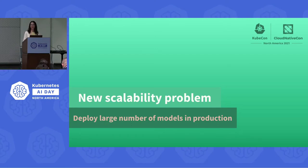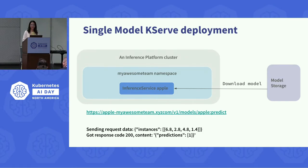Now that we've been running K-SERV in our production environment for a while, we're starting to run into new scalability problems — how do we deploy a large number of models in production? Let's take a look at how the current approach works. Currently, the gray box represents an inference platform cluster, and in this cluster each user owns their own namespace, represented by the light blue box.